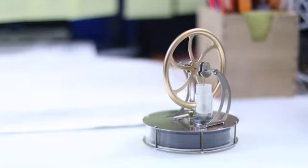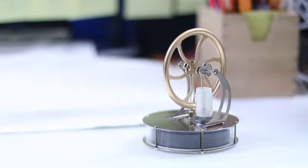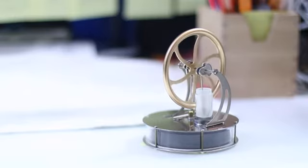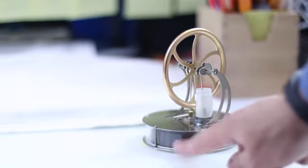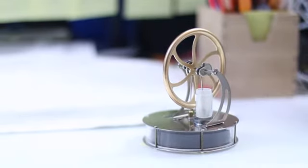That's because the Sterling engine is an external combustion engine. It needs some heat or some cold—it needs to actually see a difference in temperature between the top and the bottom surface to move the bellows that's underneath here, to create a bit of an air pocket.